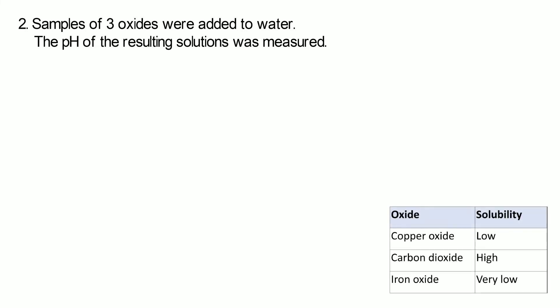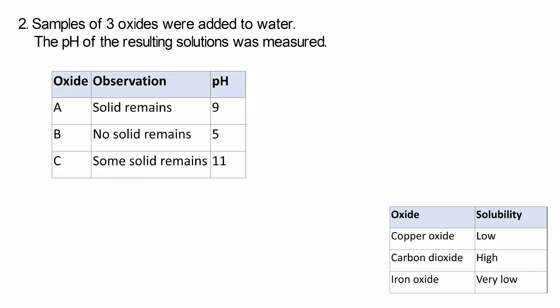And then they give us this table of data. So it tells us that copper oxide has a low solubility, carbon dioxide has a high solubility, and iron oxide has a very low solubility. Then they'll give you a table of data to show you what happened when they dissolved these three unknown oxides in water. They are those three but we don't know which one's which.